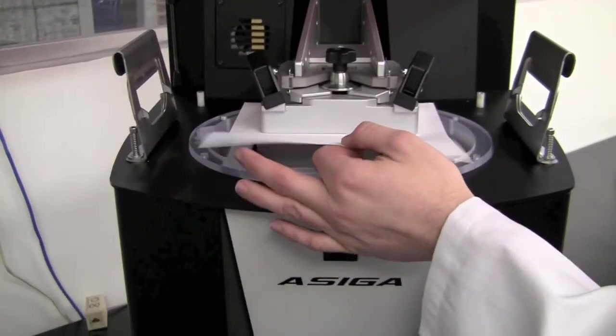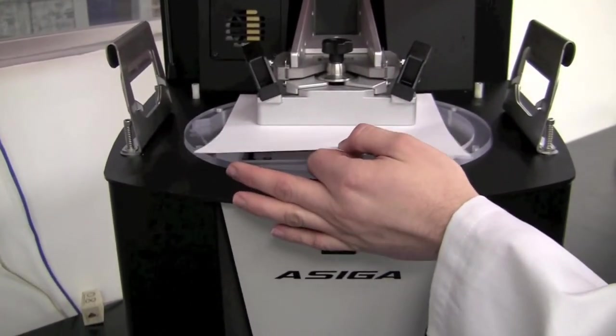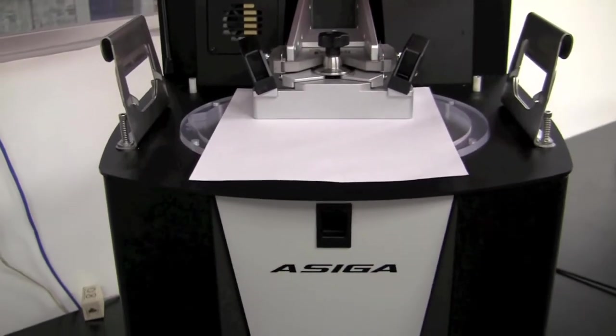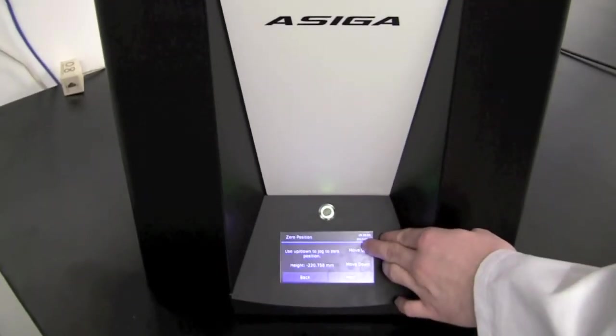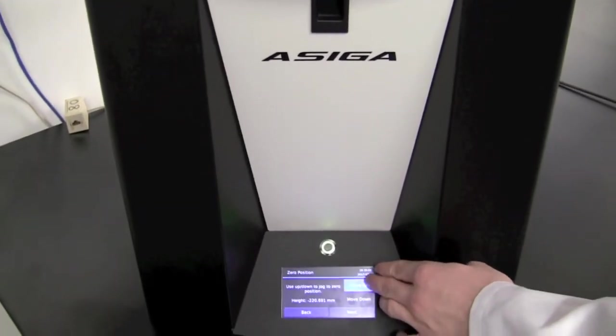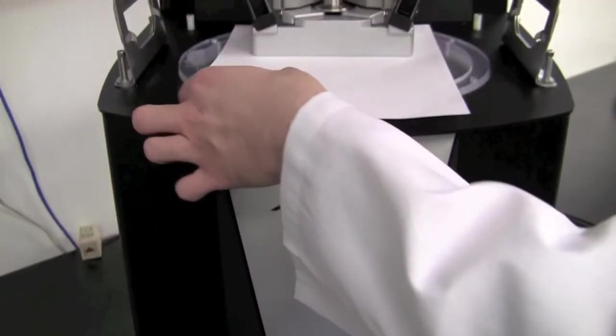At this point in time, the paper is locked. This is too tight. So we are going to move the build plate up. It is just a small amount, about 150 microns or so.